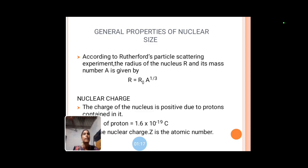General properties of nuclear size. According to Rutherford's particle scattering experiment, the radius of the nucleus R and its mass number A is given by R = R0 × A^(1/3). R0 is constant and is equal to 1.3 Fermi. That is, 1 Fermi equals 10^(-15) meter.